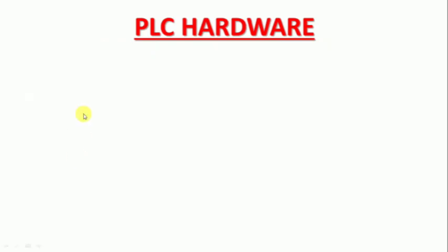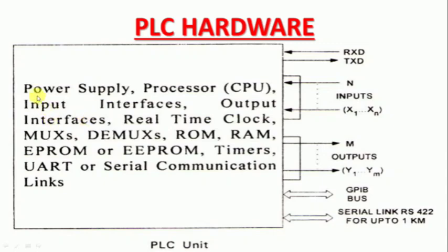We can list the 3D pin. We can use the power supply. In this case, we are going to display the power supply, processor, input interface, output interfaces, real time clock, mux (multiplexer), demux (demultiplexer), ROM, RAM, and EEPROM.